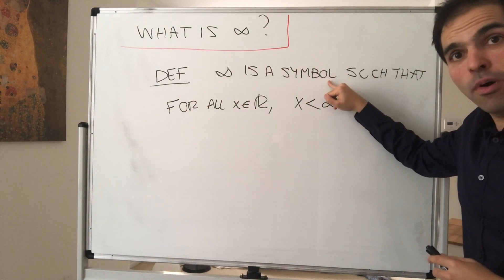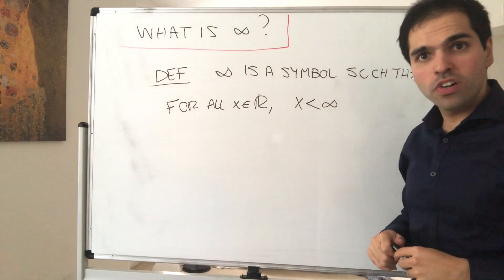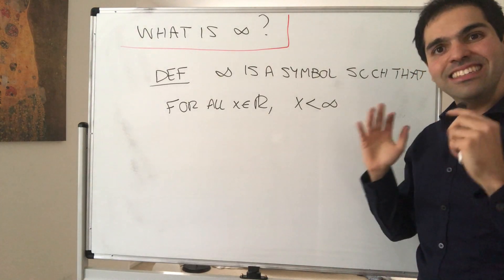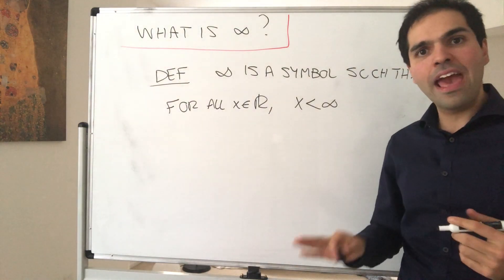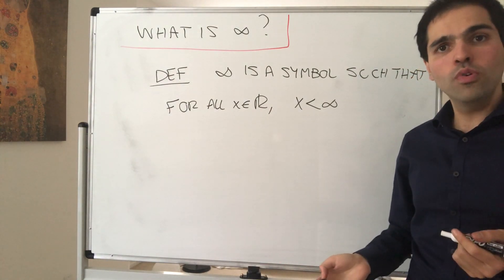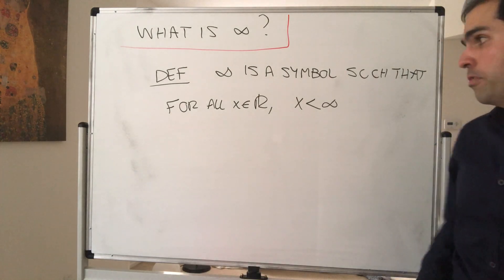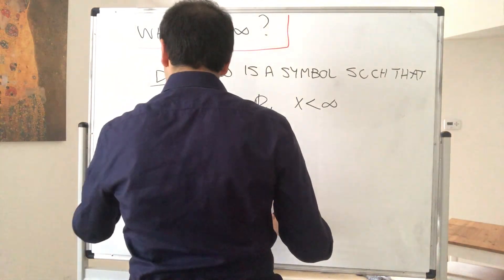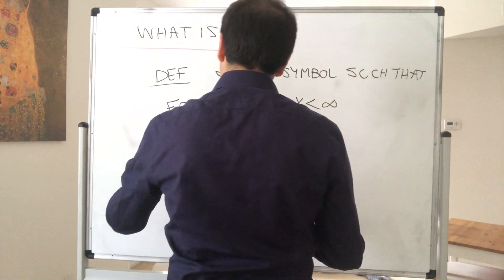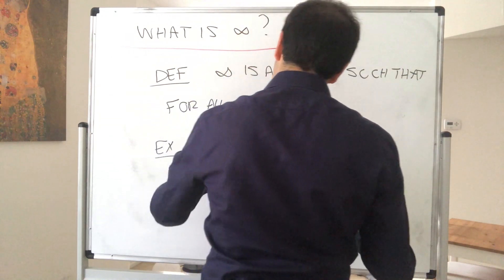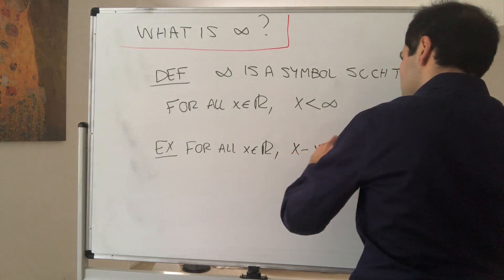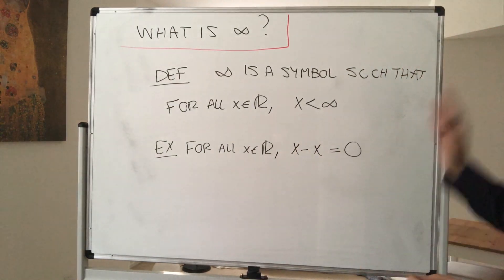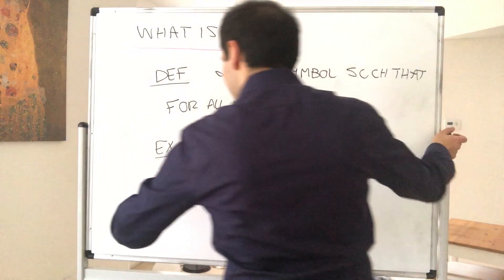Why did I write symbol? Because it's important to understand infinity is not a real number. In particular, it does not obey the same algebraic rules that real numbers do. For instance, we know that for all x in R, if you subtract x from x, you get zero.